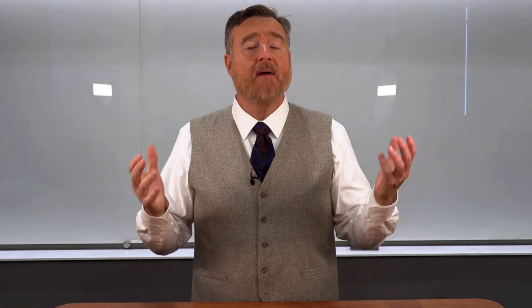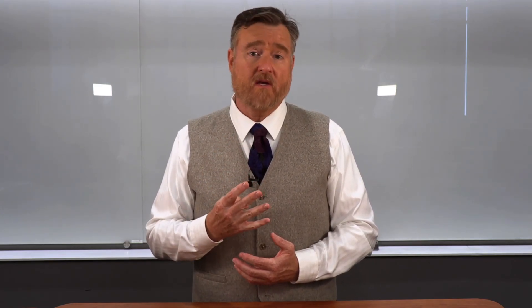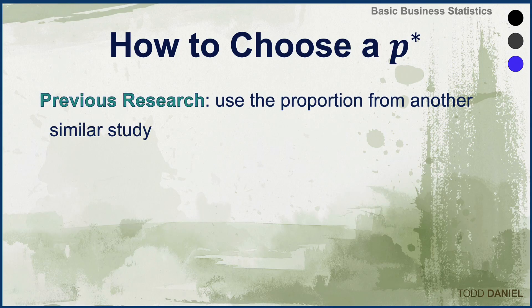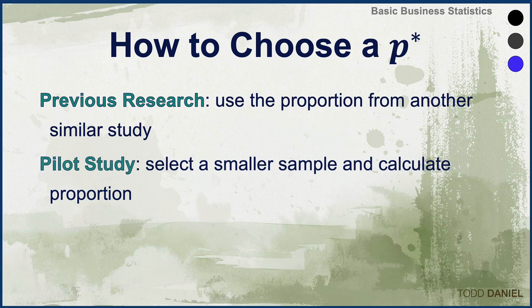But how do we come up with this planning proportion? There are four ways that we could use. Number one, we could rely on previous research. If we can find a similar study, we could use the proportion from that study to stand in for this unknown proportion. Or we could rely on our own data collection, doing a pilot study in which we select a small sample, calculate the proportion, and use that as our planning value.